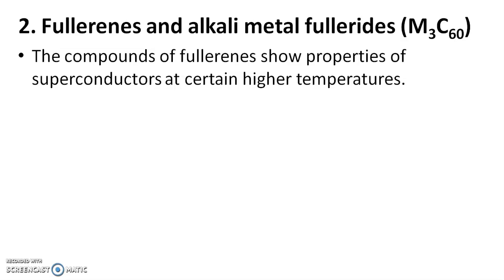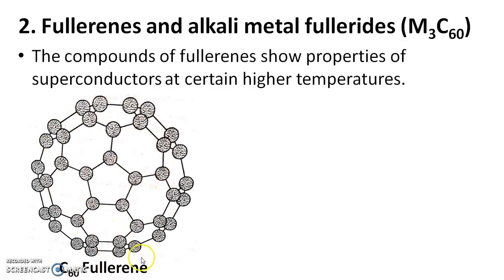Because of this, several alkali metals are doped into fullerene, and doping with potassium gave the maximum conductivity. The compounds of fullerene show properties of superconductors at certain higher temperatures. There is a space or vacancy in the structure large enough to accommodate the alkali metal ions.